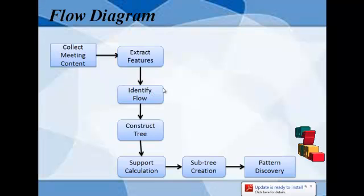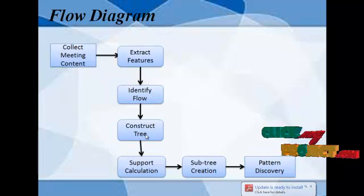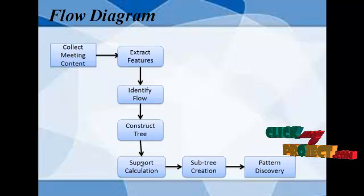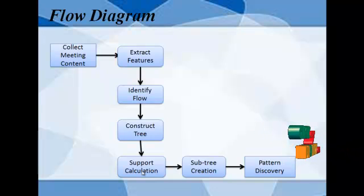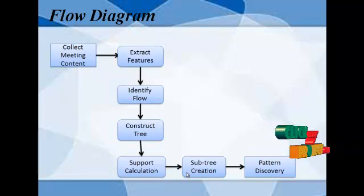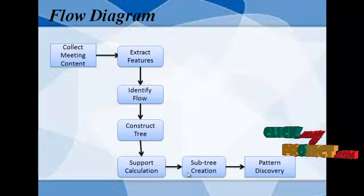According to the flow, we construct a tree. The interaction tree defines the structure of the input. Then we calculate a support value using the tree-based mining algorithm. From that support value, a support tree is created. Finally, we retrieve the frequent pattern from the subtree.